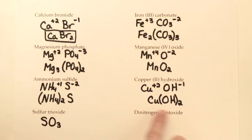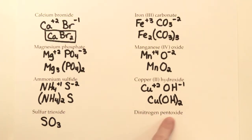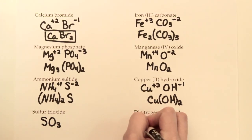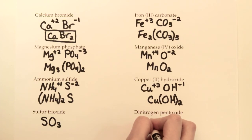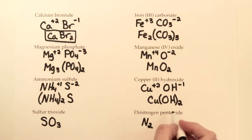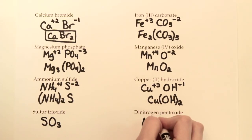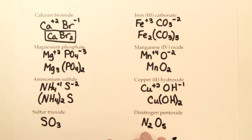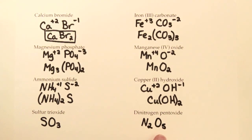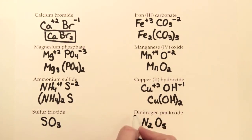For sulfur trioxide: sulfur is S, and trioxide means three oxides — so the formula is SO₃. For dinitrogen pentoxide: the prefix di means two nitrogens (N), and pent means five oxides (O), giving N₂O₅. With covalent compounds, just use the prefixes to determine how many of each part there are — no charge balancing needed.